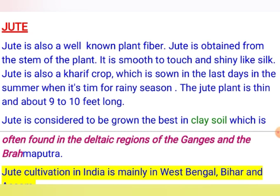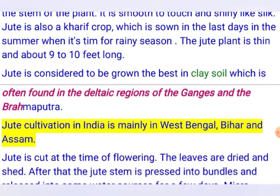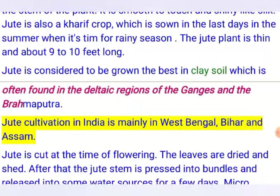When the pressure of the water supply is low, the sand particles spread to form a delta. That is a geography topic — this is just an introduction to what a delta is. Jute is cultivated in India mainly in West Bengal, Bihar, and Assam.